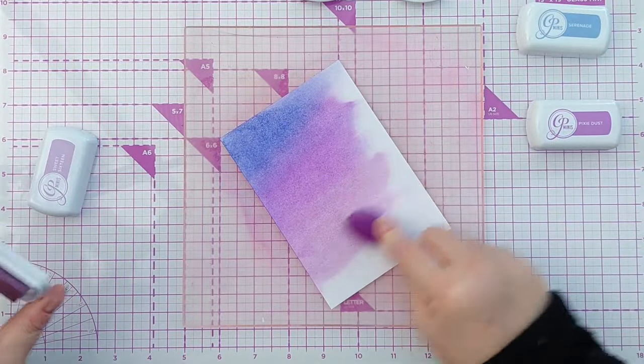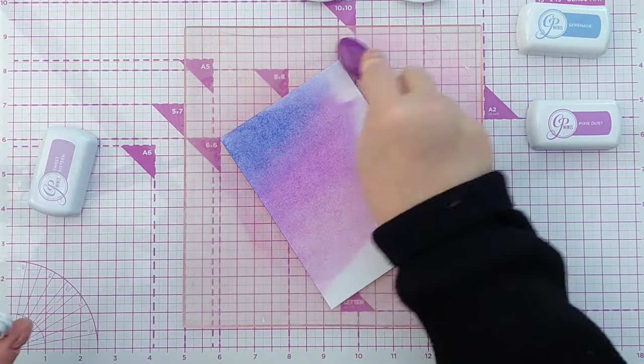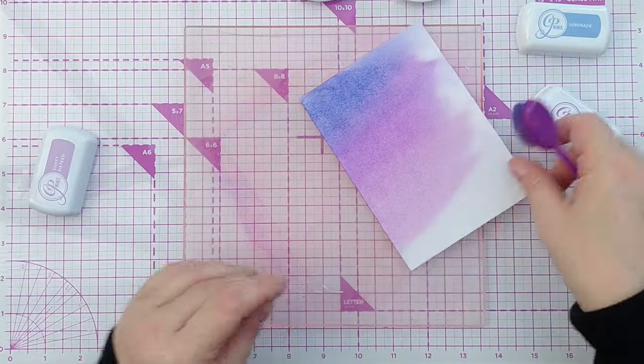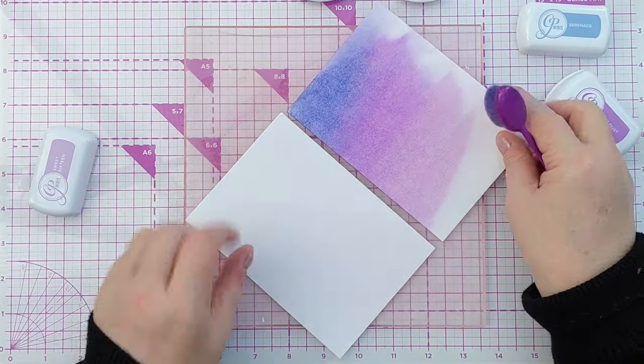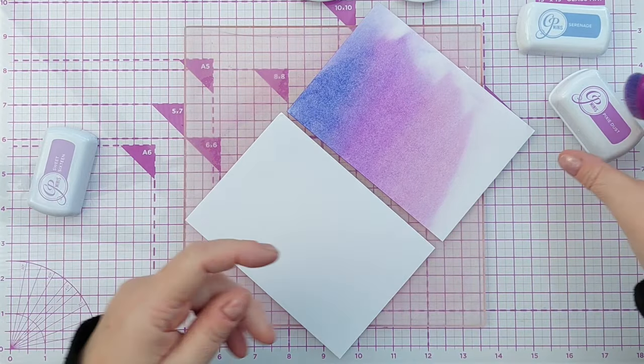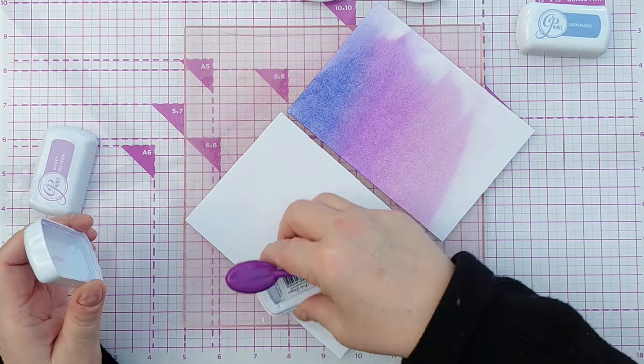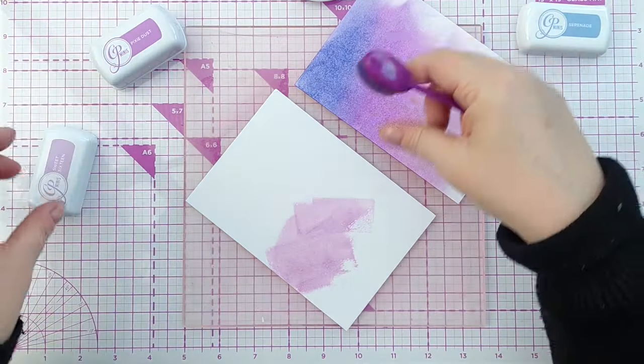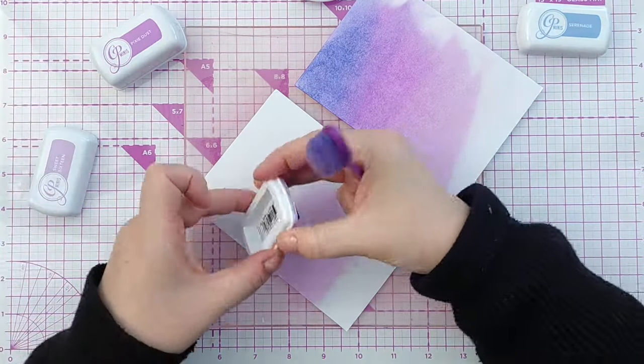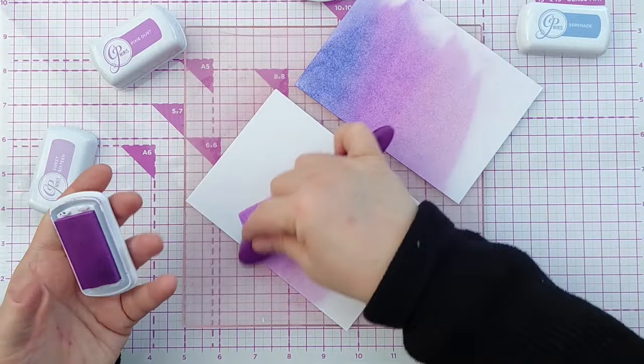There we go, I think that's intense enough and we've got a nice blend. While I've got the inks out I'm going to color another piece of mixed media paper exactly the same way because I want to create a mat or a border for my heart piece.